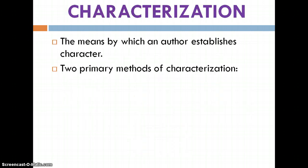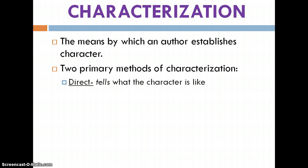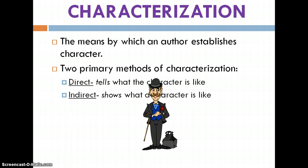Characterization is the means by which the author establishes the character — creates that character for you as the reader. There are two primary ways that the author does this: directly telling you what they're like, and indirectly showing you what they're like, setting it up so that you can tell what they're like without directly saying it in so many words.